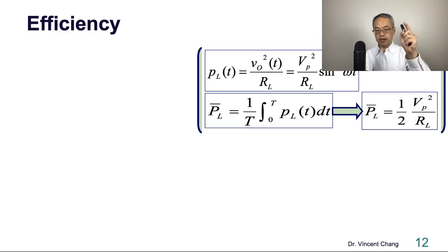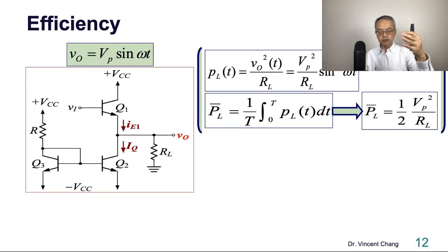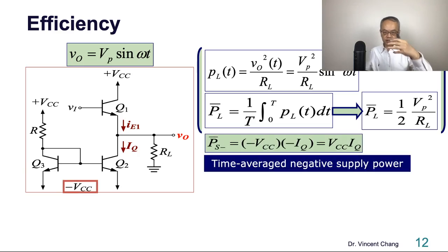So now we get the first nailed down. Time-average load power, let's move on to what's the denominator, the supply power. So the supply power, let's start with the negative supply because it's easier. As I said earlier, the supply voltage is negative, but the sink is the sink current. So it's also negative. So negative times negative equals positive. So this is the time-average negative supply power.